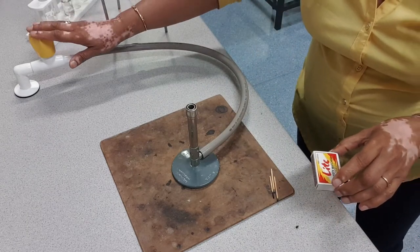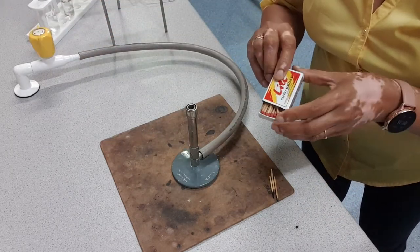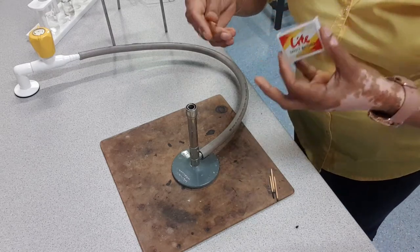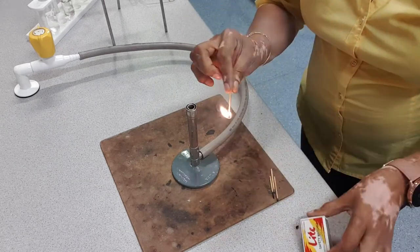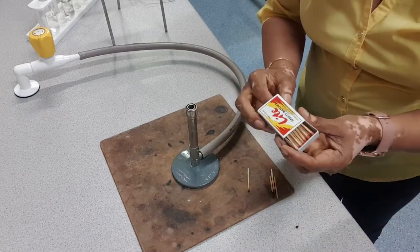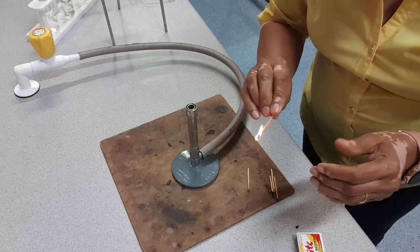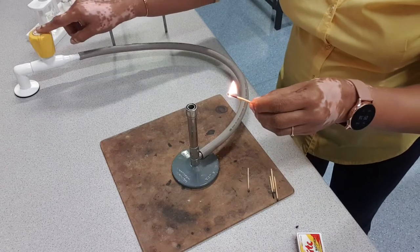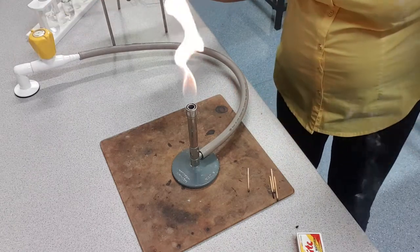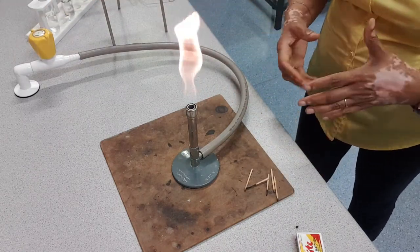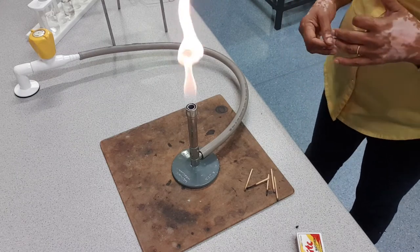We don't open the gas first; we first light the match and then turn the gas on, because you don't want the gas going all over without a flame. So light the match, then push down and turn the gas. Can you see that flame? When the air hole is closed, you have what's called a yellow flame. This is a safe flame because it's not very hot, but it's not used to heat things.